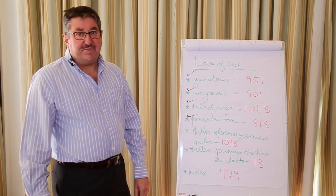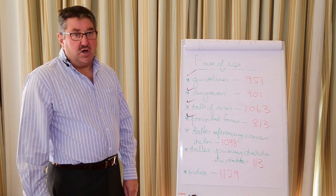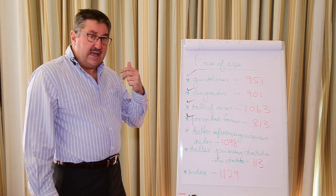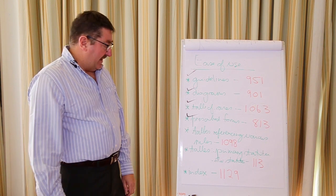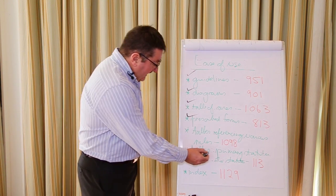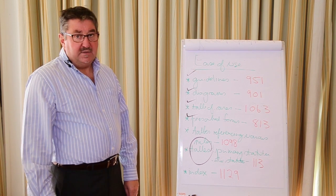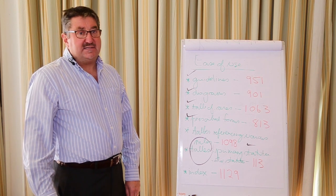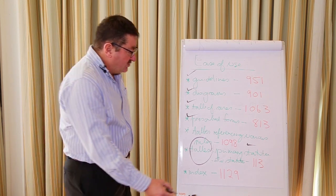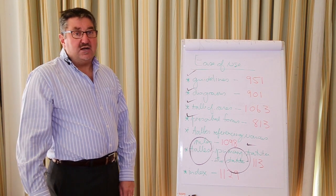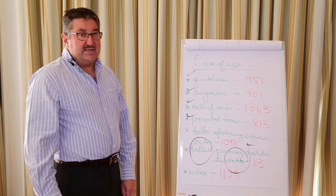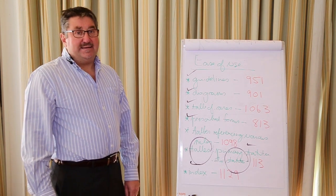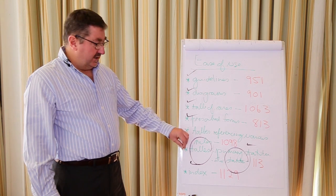There are also tables referencing various rules of the various courts: the Labor Court, the Labor Appeal Court, High Court, and obviously the Magistrates Courts. Tables of cases are also applicable in respect of statutes — the primary statutes being the Labor Relations Act and the Basic Conditions of Employment Act, as well as other statutes. And lastly but not least, there's about a 30-page index section in the publication that makes it easy for you to cross-reference various terminologies.